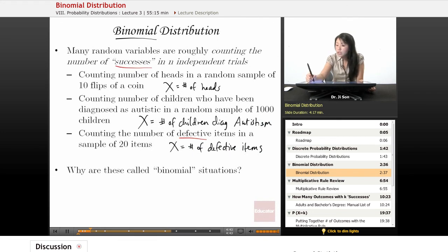Just to round it out, let's talk about what N is in each case. N is 10 for the coin flips, N is 1,000 for the autism diagnosis, and N is 20 for the defective items.